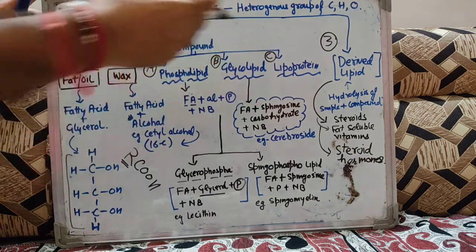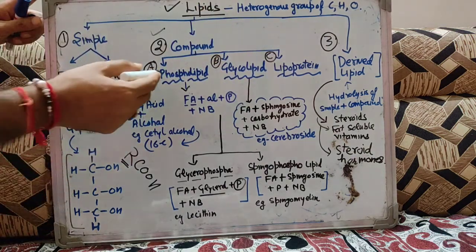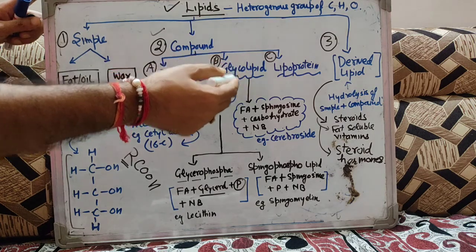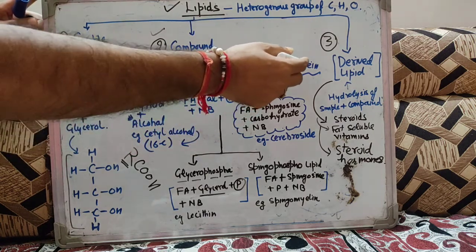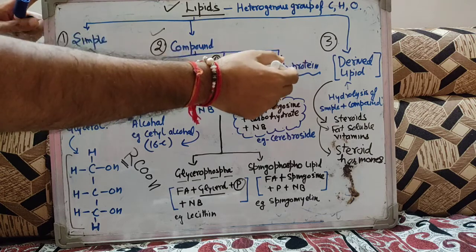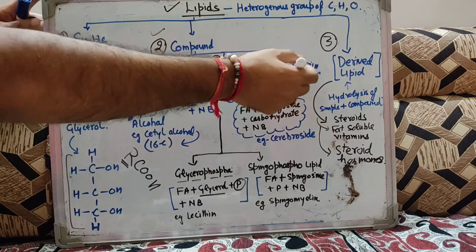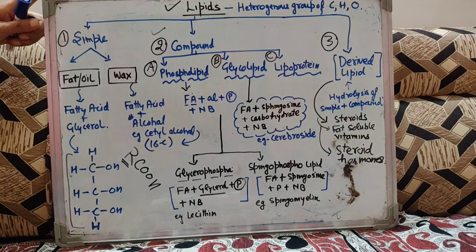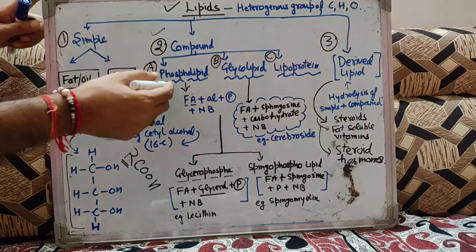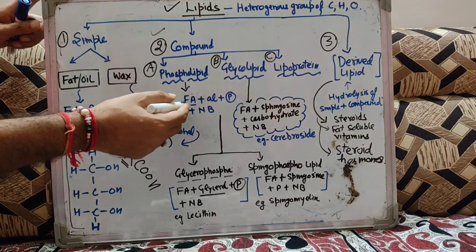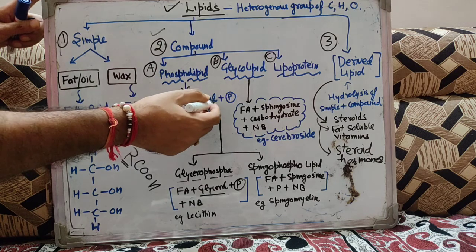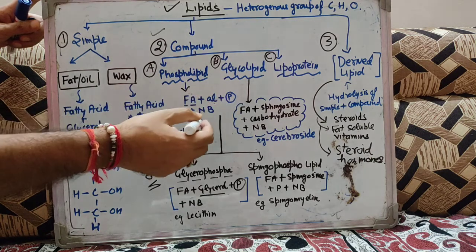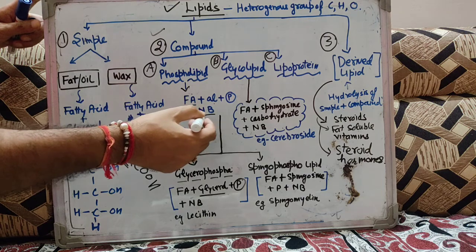Compound lipids तीन types के हो सकते हैं: phospholipids, glycolipids and lipoproteins. नाम से आपको पता लग रहा होगा difference का — phospholipids में phosphate group होगा, glycolipids में carbohydrate होंगे, और lipoproteins में lipids and proteins का composition होगा. Phospholipids में it will have fatty acid, alcohol, phosphoric acid, phosphate group, and a nitrogenous base.